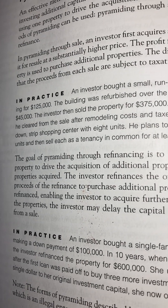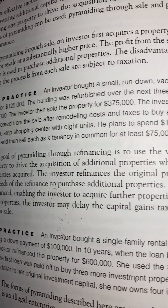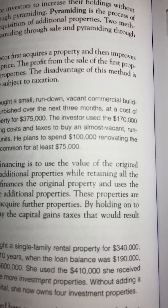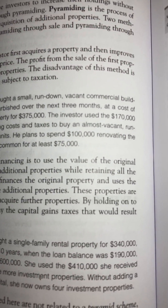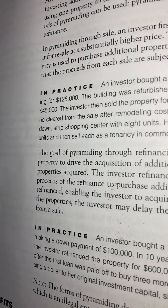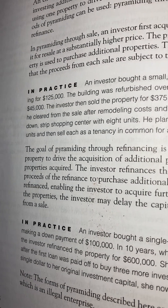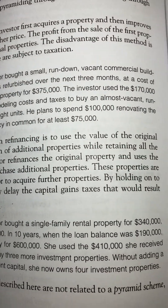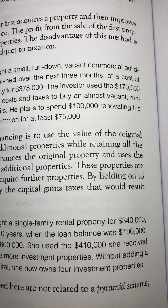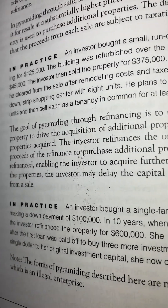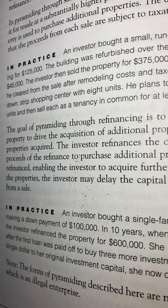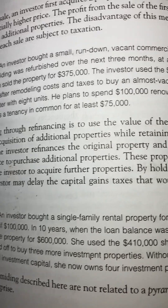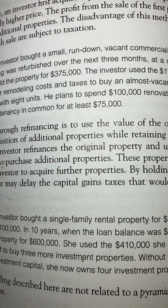The investor used the $170,000 he cleared from the sale — after remodeling costs and taxes — to buy an almost vacant rundown strip shopping center with eight units. He plans to spend $100,000 renovating the units and then sell each as a tenancy in common for at least $75,000.